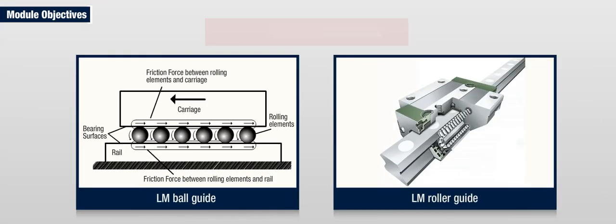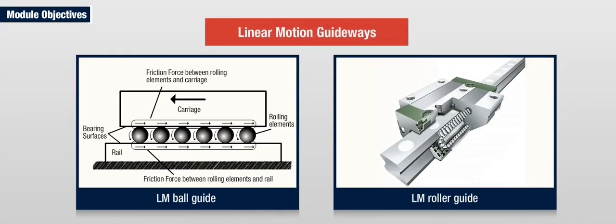Linear motion guideways bear the load and guide linear motion with precision. They use rolling elements as a force transmission interface between the rail and the block, with a recirculation system for unbounded movement.